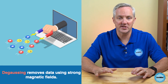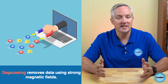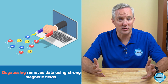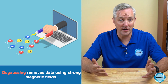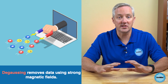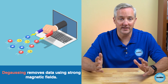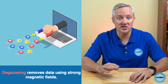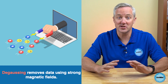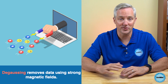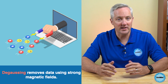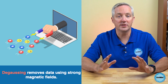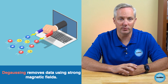Degaussing is also used for erasing data on storage devices. Degaussing applies a strong magnetic field to magnetic storage devices, such as magnetic hard drives or tapes. This process disrupts the magnetic material where the data is stored, erasing that data. It's important to note that degaussing does not work on solid-state drives because they do not use magnetic media for storage. While degaussing is a powerful method for data erasure, it also renders the storage device unusable and requires special equipment.